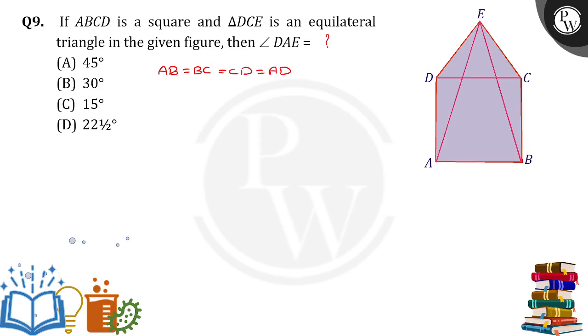All the four sides are equal and triangle DCE is an equilateral triangle. What do you mean by equilateral triangle? All the three sides are equal. So we know that DC is equal to CE, which is equal to DE, which means all the sides are equal.